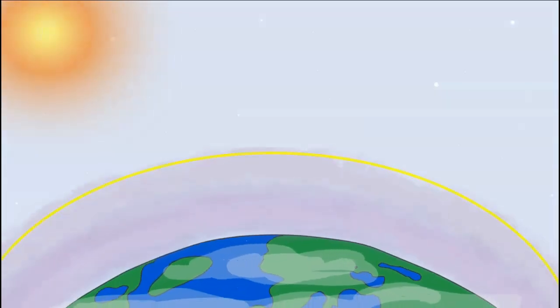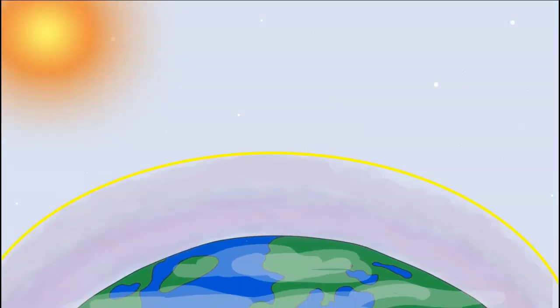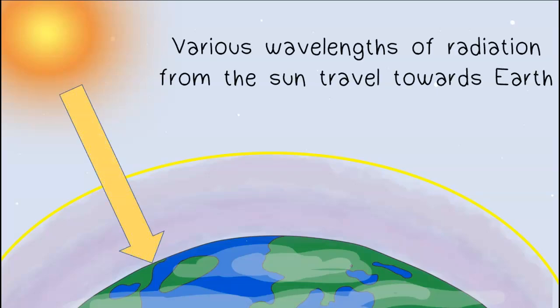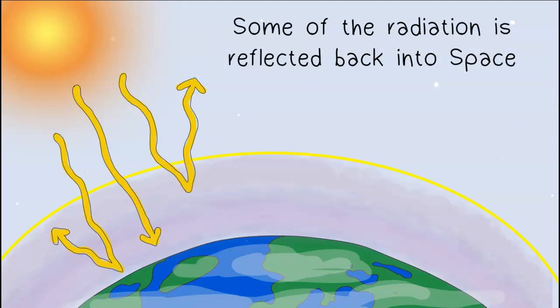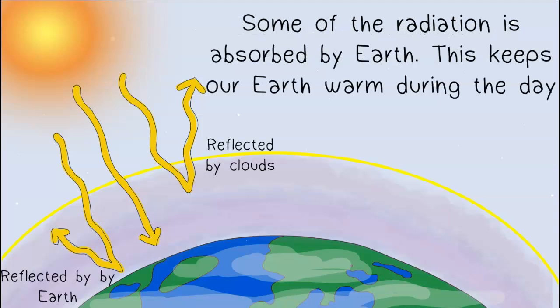Let's take a look at how greenhouse gases help to maintain temperature on planet Earth. Various wavelengths of radiation from the sun travel towards Earth. Some of the radiation is reflected back into space. Some of the radiation is absorbed by Earth. This keeps our Earth warm during the day.